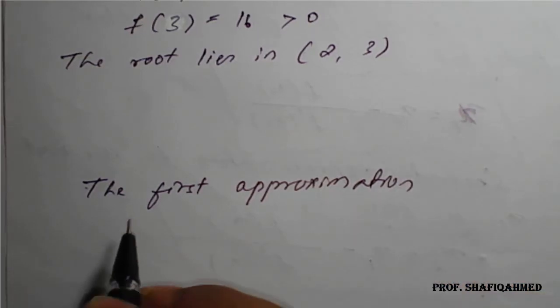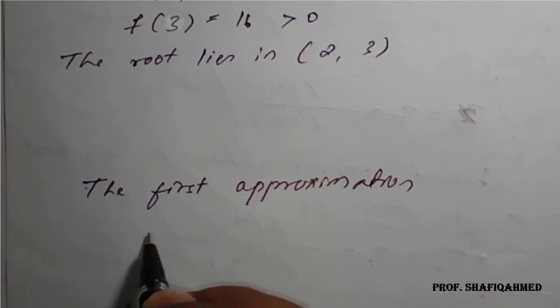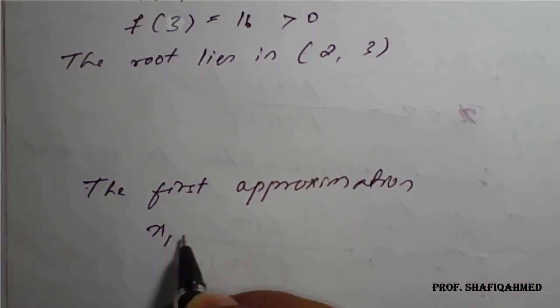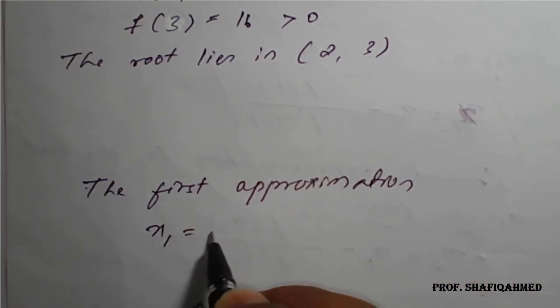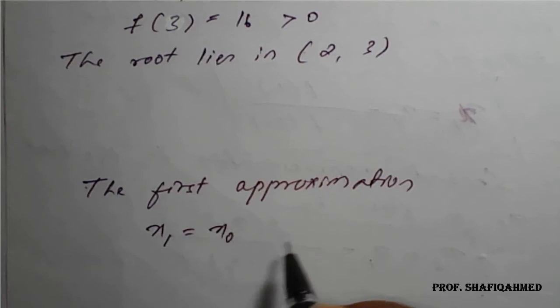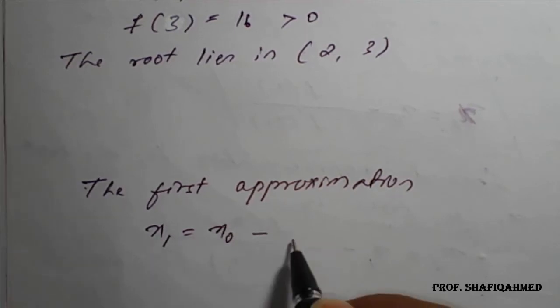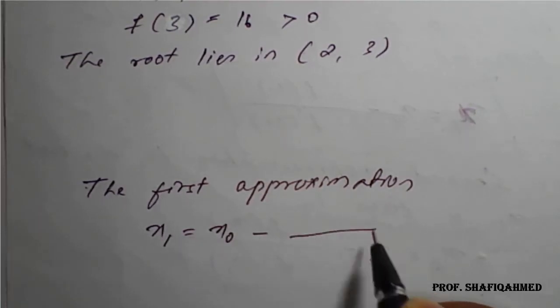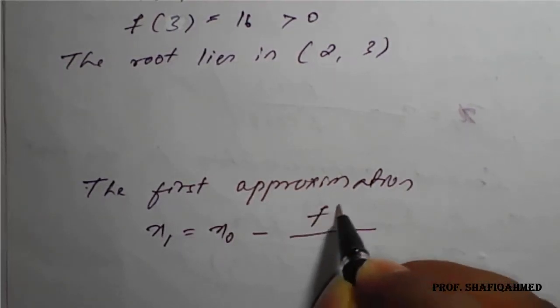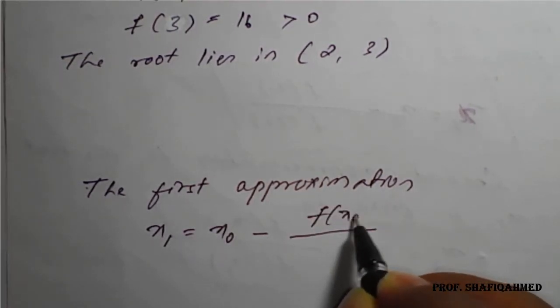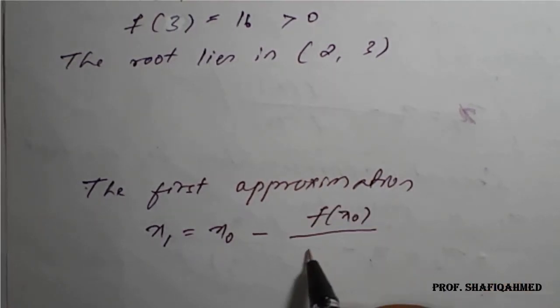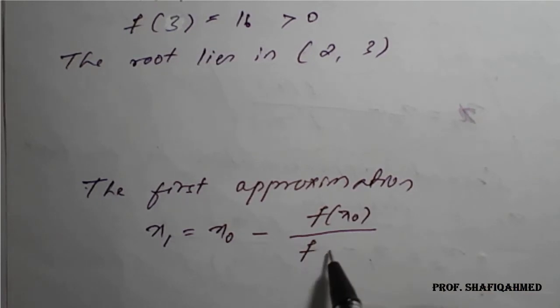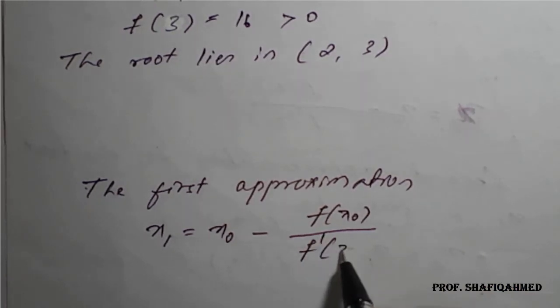Newton-Raphson method: x1 is equal to x naught minus f of x naught divided by f dash of x naught.